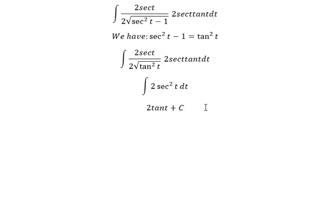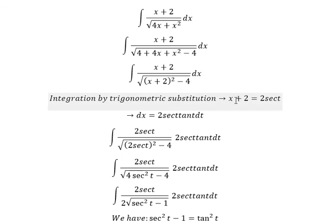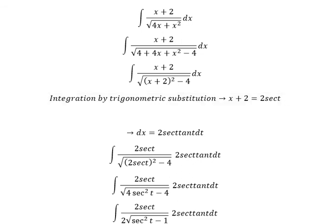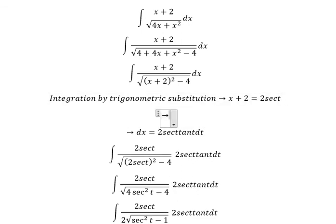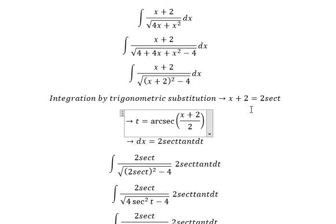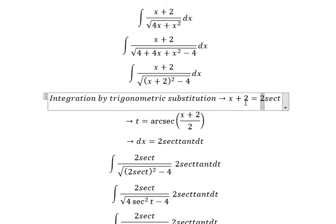We need to change back for x. So we will get t equal to arcsecant of x plus two divided by two.